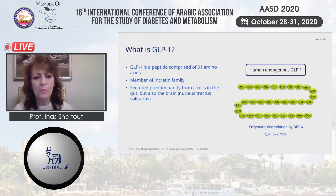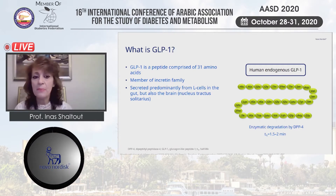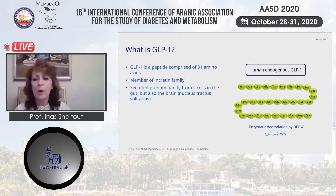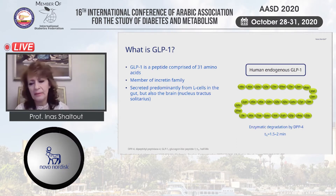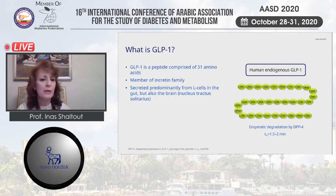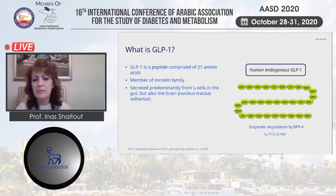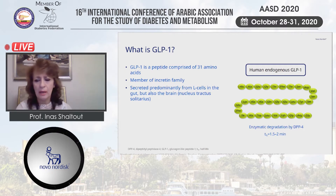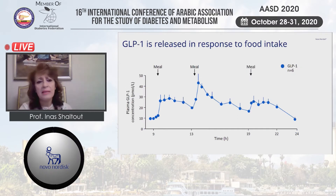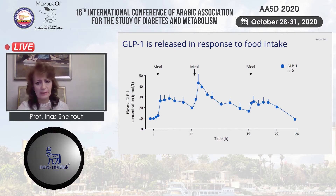Endogenous GLP-1 is a peptide and a member of the incretin family. However, endogenous GLP-1 is rapidly degraded by the DPP-4 (dipeptidyl peptidase) enzyme within one to two minutes after secretion. It is secreted primarily from the L-cells of the gut, but the brain also contains receptors for GLP-1 and secretes GLP-1. It is released in response to food intake, secreted in relation to meals.